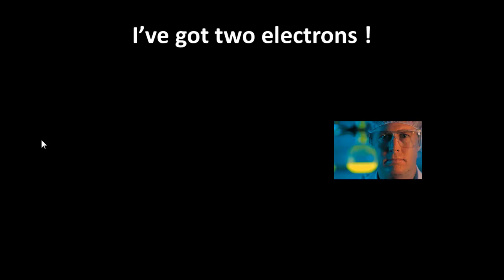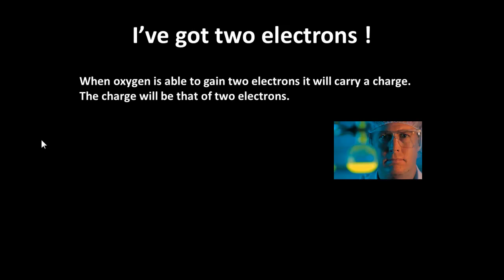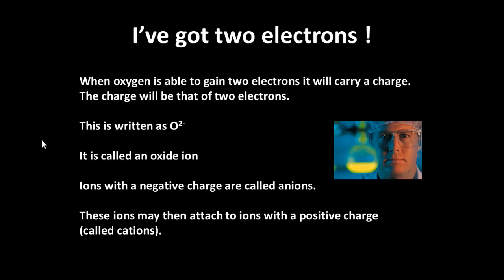So where is it going to do this, or how is it going to do this? If it can gain two electrons, in other words, if it can take two electrons from somewhere, it will have a charge, and the charge will be of those two electrons. We would then write it as O with two minuses to show that we've got the two charges of negative electrons. In other words, it has two more electrons than it has protons. So it would then be called an oxide ion.